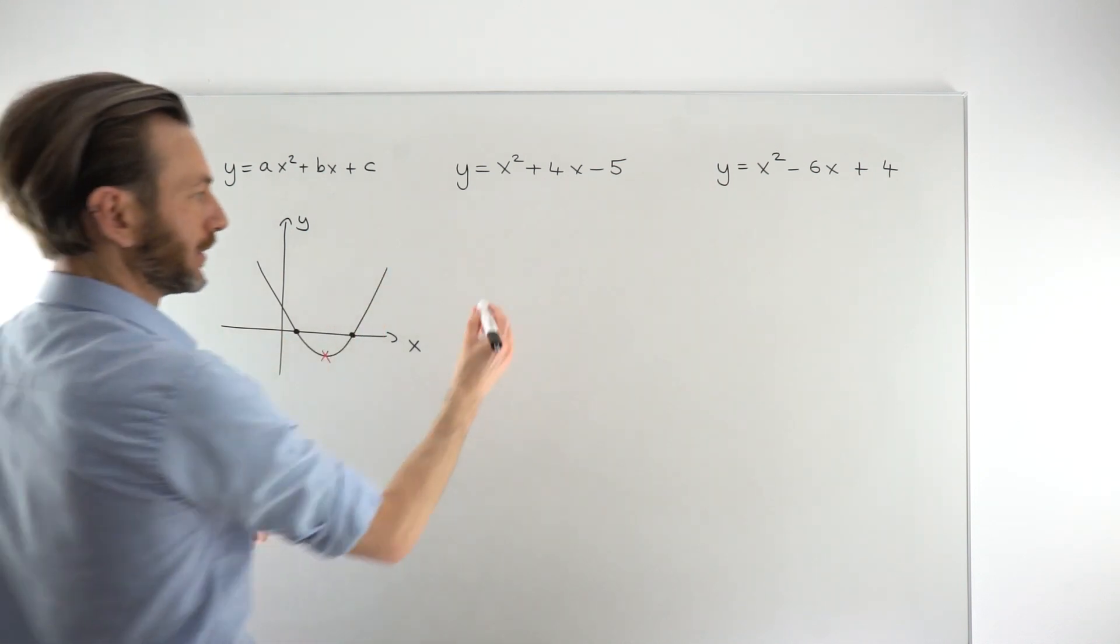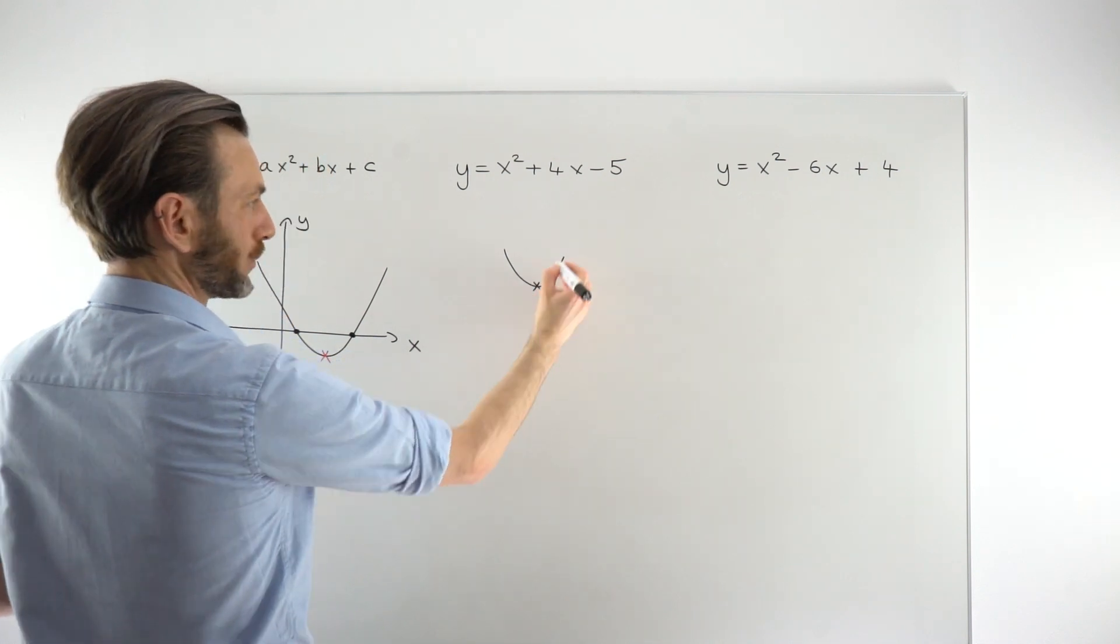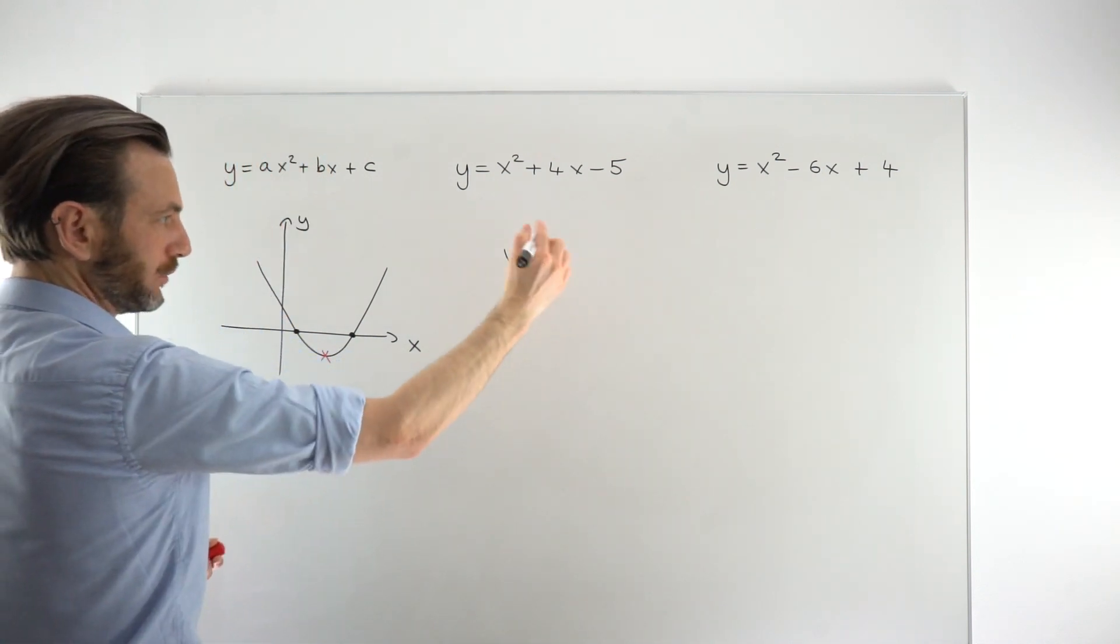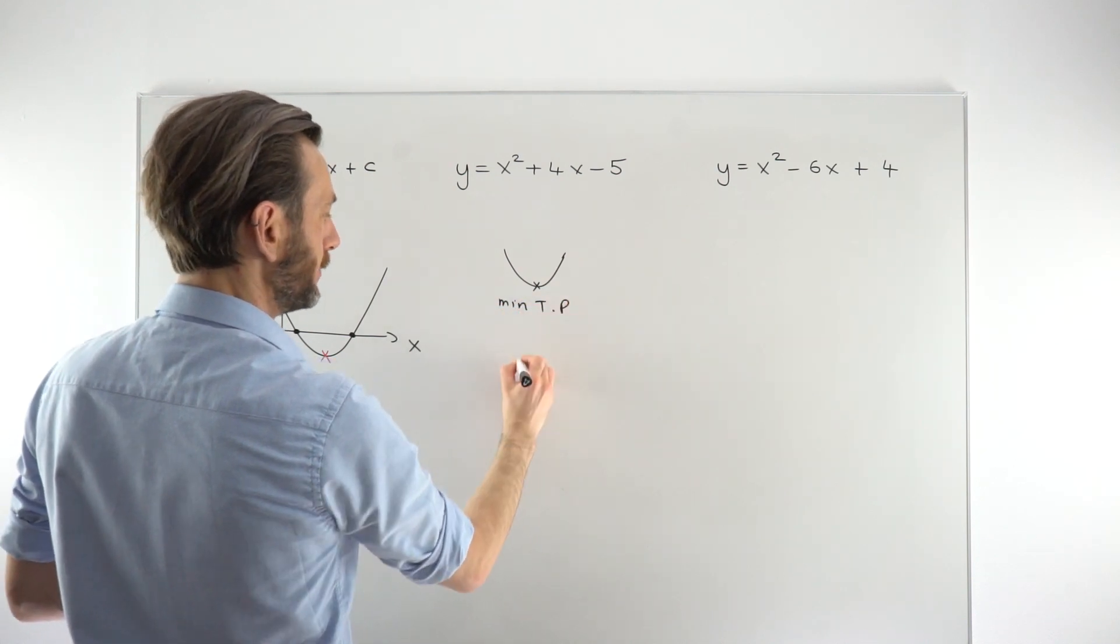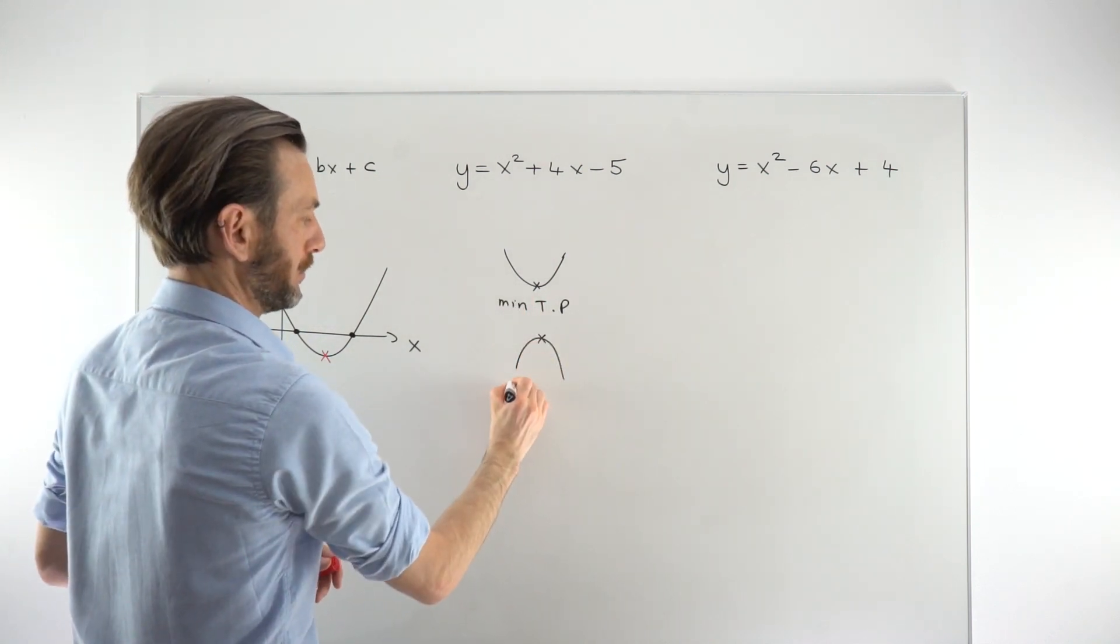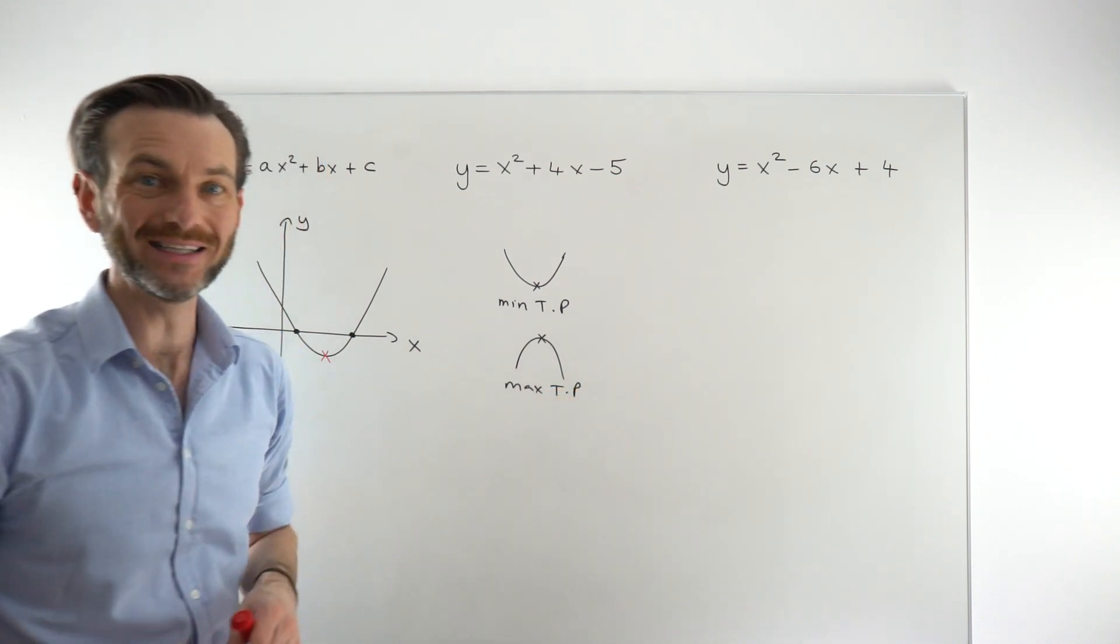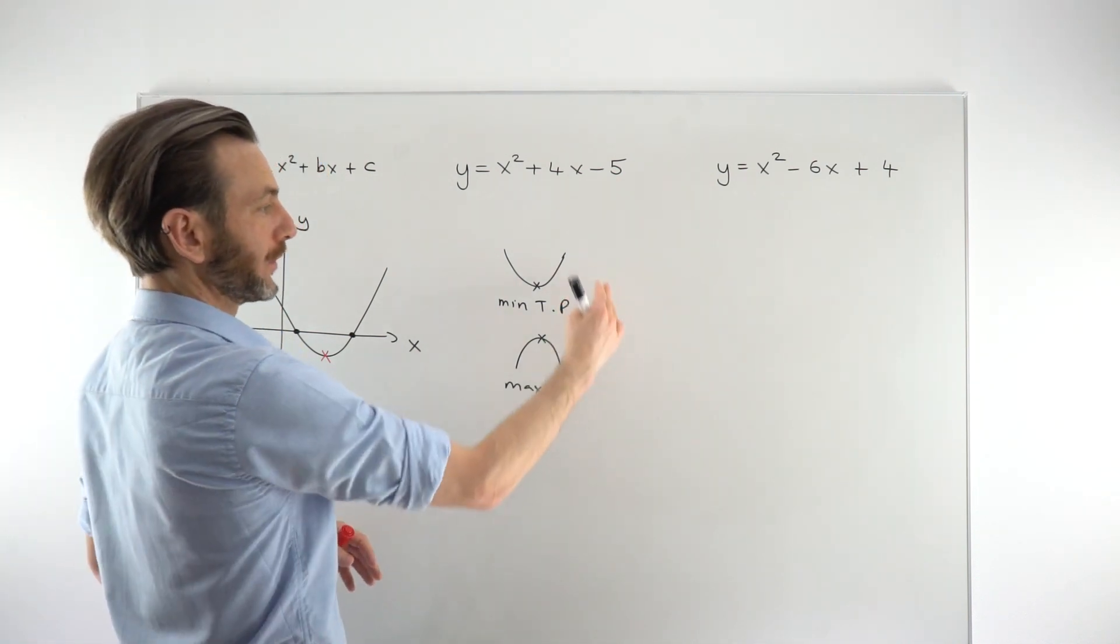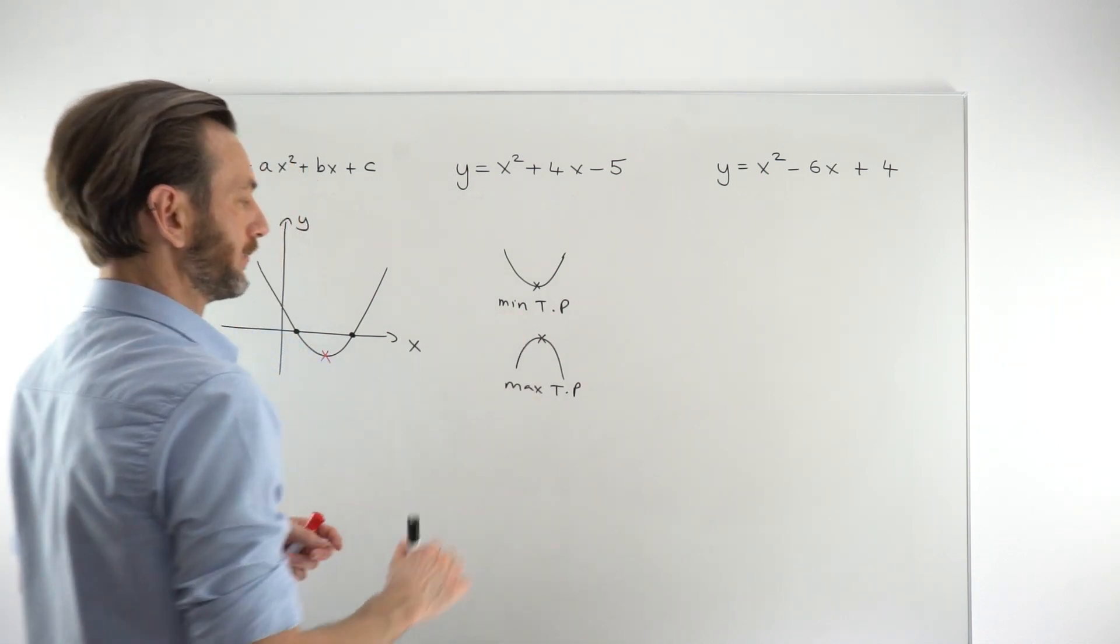Remember also that with parabolas in quadratic functions, you can get either a minimum turning point, which is where the parabola is sort of u-shaped. But you can also get inverted parabolas like this, where you would have a maximum turning point. So the method we're going to explore today for finding the turning point is good for both of these scenarios. You don't need a different method for a minimum and a different method for a maximum.